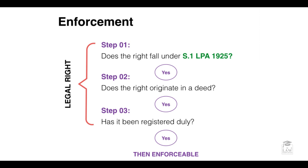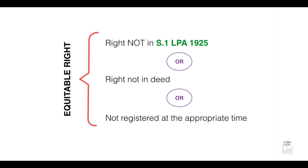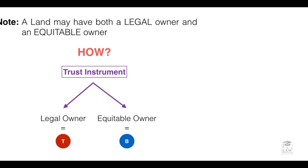A right becomes equitable rather than legal when one of those aspects is not fulfilled — that is, if it does not fall within section one, it does not originate in a deed, or it has not been duly registered. Any one of these components being missing may mean that the right becomes an equitable right.